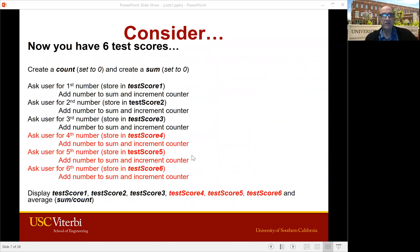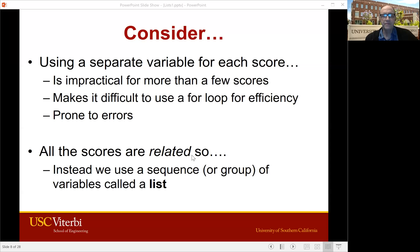But what if we have six scores? Now here's what the program looks like: test score 1, test score 2, test score 3, test score 4, test score 5. So we're just getting lots and lots of variables here. And the program is of course looking long and repetitive. And you can't really use a loop well because you still have to name all those separate variables.